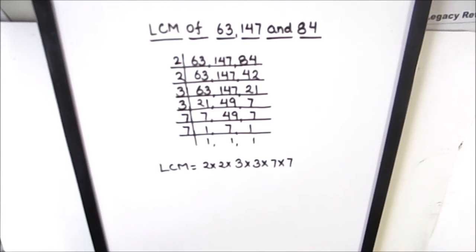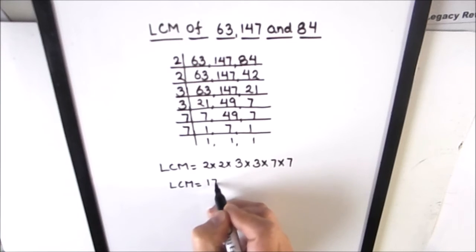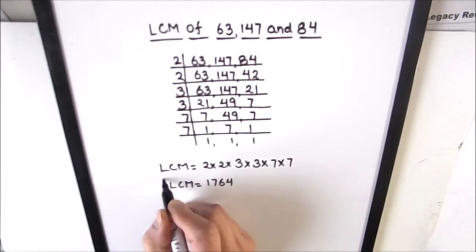The LCM of the three numbers is equal to: 2 times 2 is 4, 4 times 3 is 12, 12 times 3 is 36, and 36 times 49 is 1764. So the LCM of the three numbers is 1764.